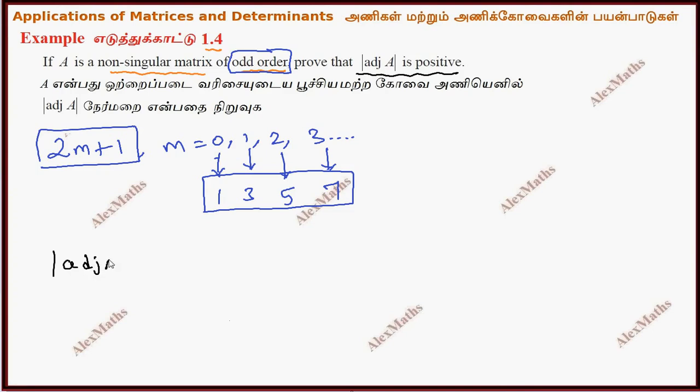So the adjoint of A, the determinant is |A| to the power n minus 1. This is the formula. This is the order from the question.